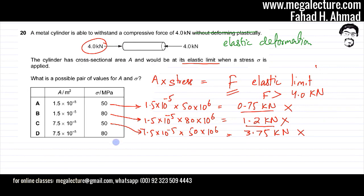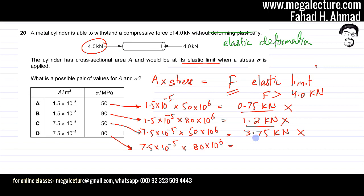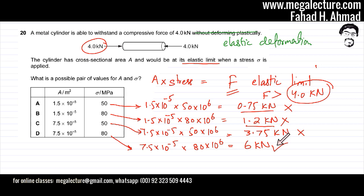By default, option D must be correct. It's 7.5×10⁻⁵ multiplied by 80×10⁶, which gives a force of 6 kilonewtons. This force is greater than the 4 kilonewtons the cylinder can already withstand, so this is the force that takes the cylinder to its elastic limit. Option D is the correct answer.